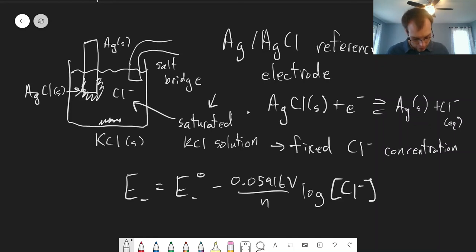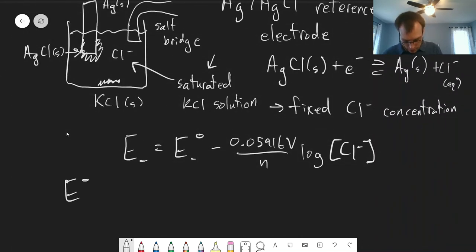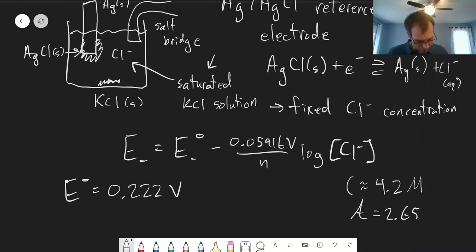We know that the chloride concentration is fixed. We can look up the value: E° for the reduction of silver chloride is 0.222 volts. But what we'll measure is not exactly that because we don't have a one molar concentration of chloride—it ends up being significantly higher. The concentration of chloride is about 4.2 M. Really, it's not the concentration we care about—it's the activity of chloride. At these high concentrations, the concentration and activity are quite different. The activity is about 2.65.